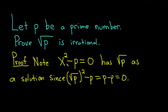So basically all we've done is stated that if you take the square root of p and plug it in for x, it makes the equation true. Therefore, the square root of p is called a solution — that's what it means for a number to be a solution of an equation. When you plug it into the equation, the equation is true. In this case it's also called a root, so root and solution mean the same thing.